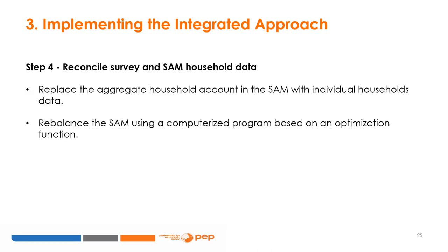Step 4: reconcile survey and SAM household data. The aggregated household account in the SAM is replaced with thousands of individual household accounts from a nationally representative survey. The SAM is rebalanced using a computerized program based on an optimization function. The cross-entropy method is the most used, as it appears to be more precise than other available methods such as RAS, OLS, and Huber's methods, and more adequate at the disaggregate level.